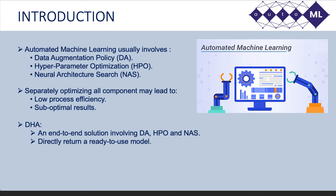Automated machine learning, also known as AutoML, usually involves several crucial components, such as data augmentation policy (DA), hyper-parameter optimization (HPO), and neural architecture search (NAS). The naive solution of applying them sequentially in separate stages not only suffers from low efficiency but also leads to sub-optimal results.